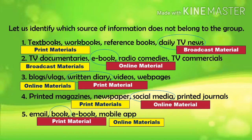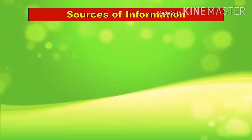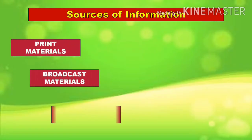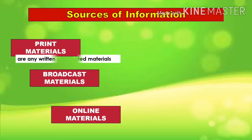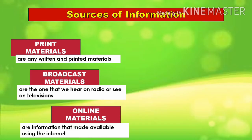Good job, class! You're doing great! To wrap up our discussion, let us have a quick recap. Information can be acquired using any of these sources: print materials, broadcast materials, and online materials. Print materials are any written and printed materials, whereas broadcast materials are the ones that we hear on radio or see on television. On the other hand, online materials are information made available using the internet.